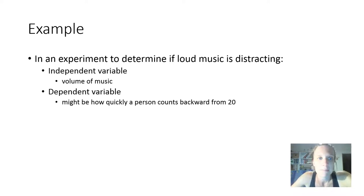So let's stop and think about it again. The independent variable is the volume of music. That means we're going to intentionally change how loud the music is as we work through our experiment. Our dependent variable is allowed to change, and this is just how quickly the person would count backward from 20.